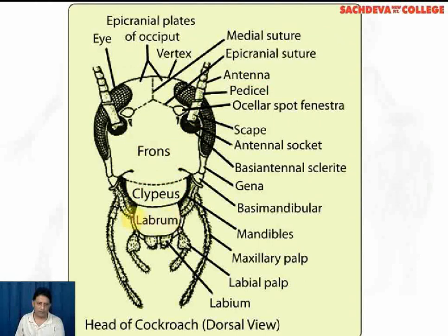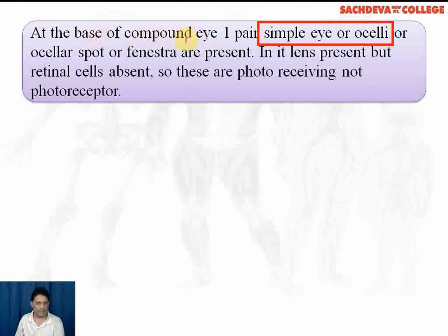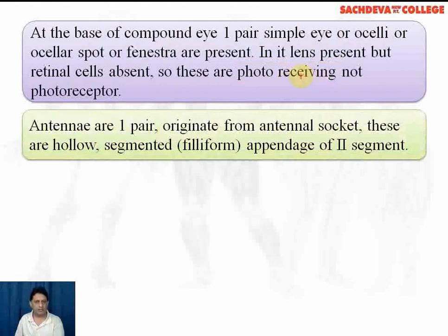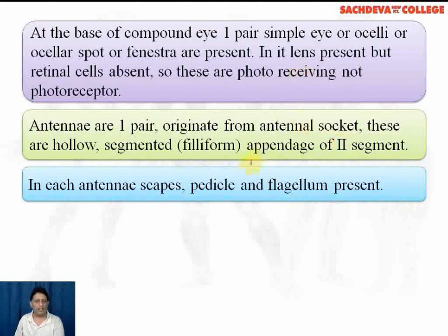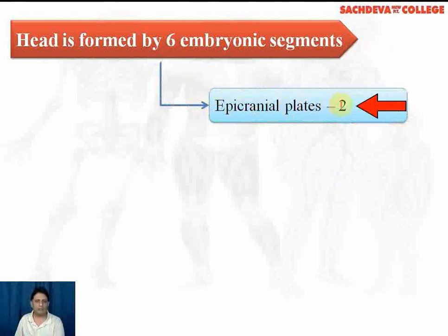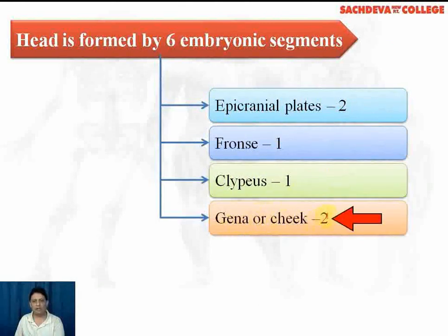The clypeus provides attachment to the upper lip or labrum, which provides attachment to the lower lip or labium. At the base of the compound eye, there is another pair of simple eyes called ocelli, which act only as photoreceptive structures. One pair of antennae originates from the antennary sockets — the antennae are hollow, segmented appendages arising from the second segment. Each antenna has three parts: scape, pedicel, and flagellum. During embryonic condition, the head is formed by six embryonic segments: the apicranial plate forms two, the frons forms one, the clypeus forms one, and the gena (cheek) forms two segments.